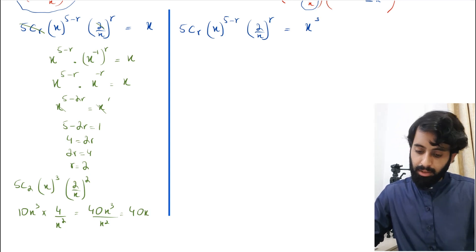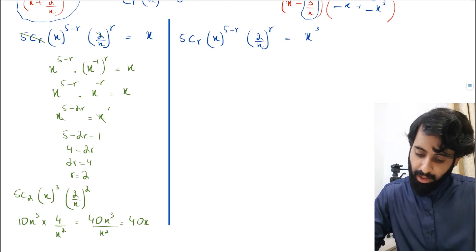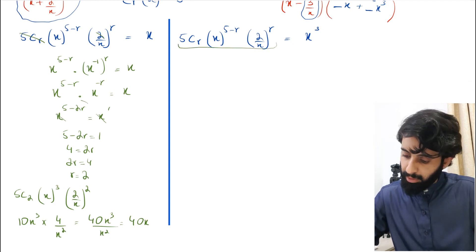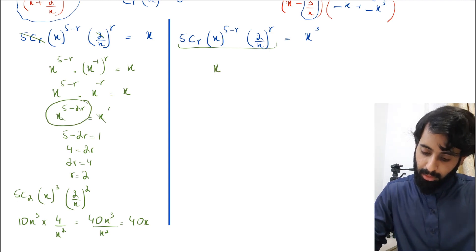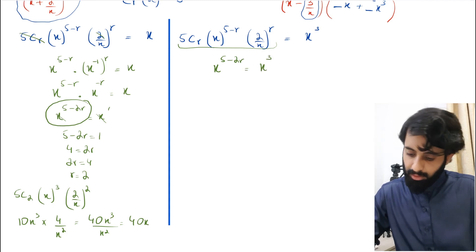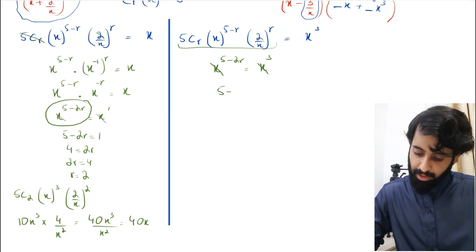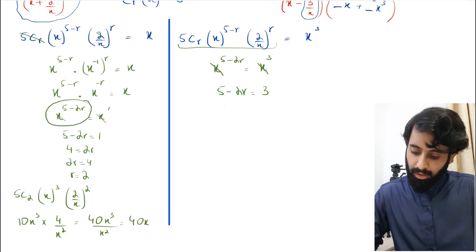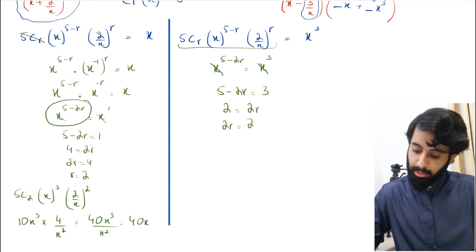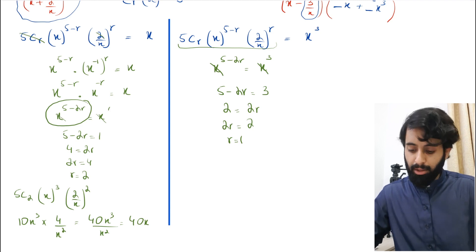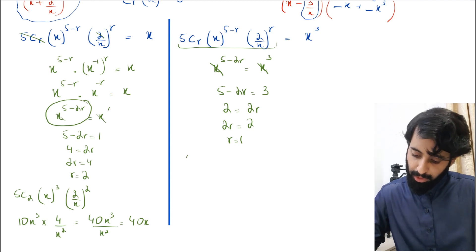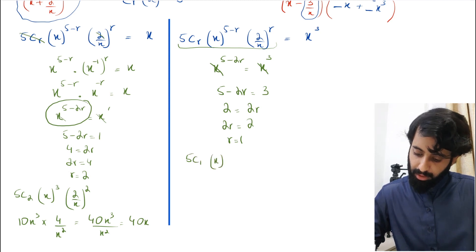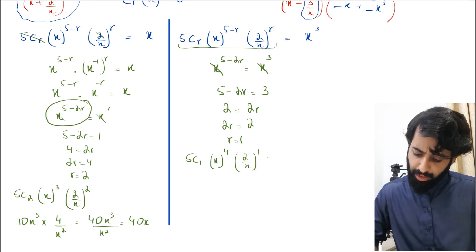Now for the coefficient of x³. We already know the power simplifies to x^(5 − 2r), and this time we want it equal to x³. Comparing powers: 5 − 2r = 3, so 2 = 2r, giving r = 1. Plugging in r = 1: 5C1 · x^(5−1) · (2/x)^1 = 5 · x⁴ · (2/x) = 10x⁴/x = 10x³. So the term in x³ is 10x³.